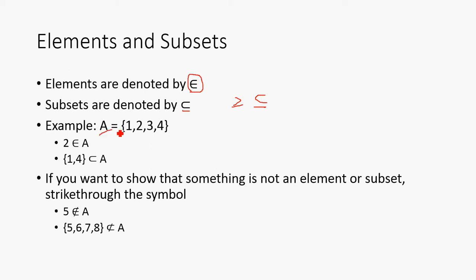So, take for example the set right here. A is equal to {1,2,3,4}. You can note that 2 is an element of A, as it's seen right here. And that {1,4}, the set {1,4}, is a subset of A. See? We've got it right here, and we've got it right here.